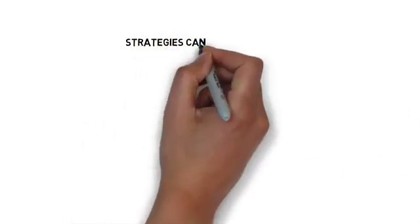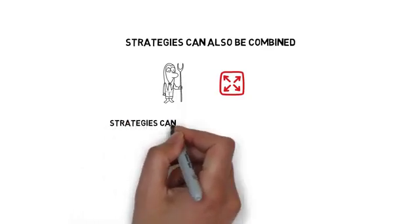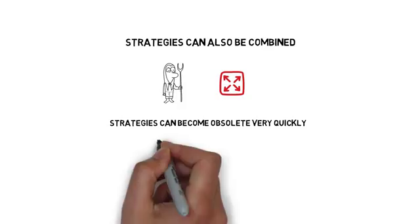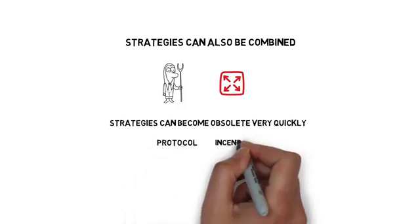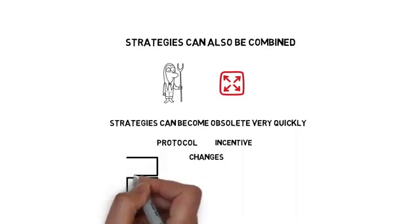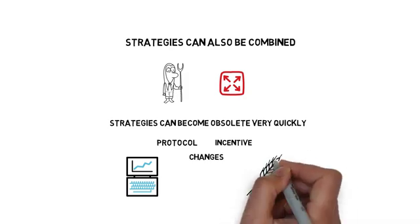Some of these strategies can also be combined so yield farmers can maximize their returns even further. It's worth keeping in mind that yield farming strategies can become obsolete very quickly due to protocol or incentive changes — something that may be super profitable today may not be profitable at all the next day. So it's important to keep an eye on running strategies and rotate crops if necessary.